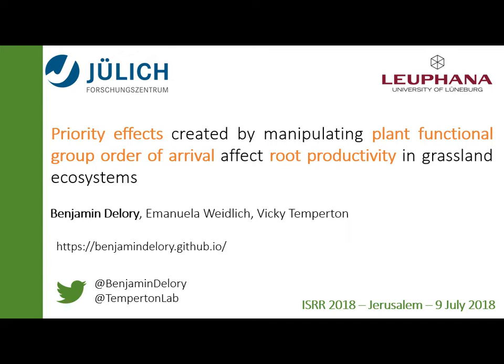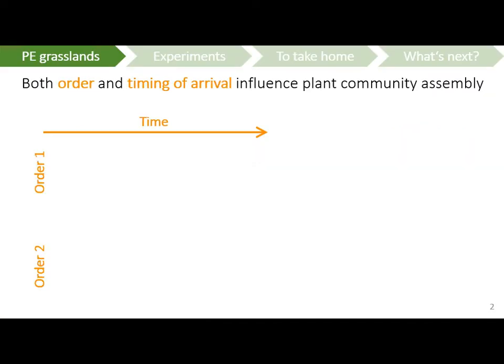As you can guess from the title, today we'll speak about priority effects in grassland ecosystems. The first thing I would like to say is that both the order and the timing of plant species' arrival in the system can influence plant community assembly. And I would like to show you an example of that.